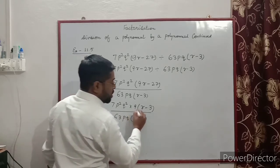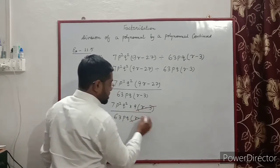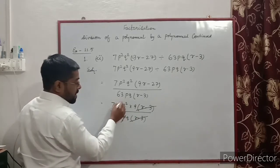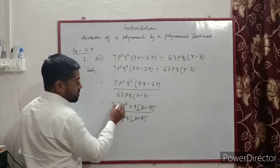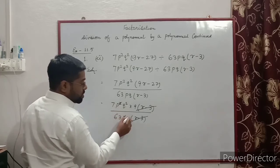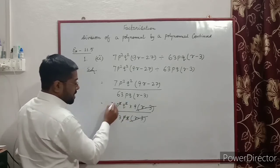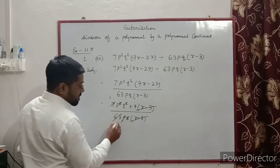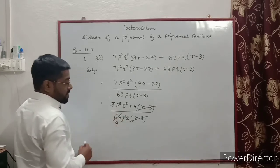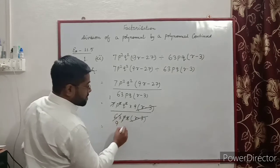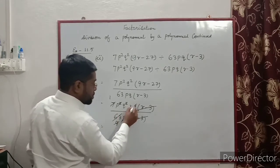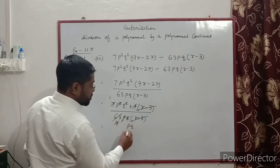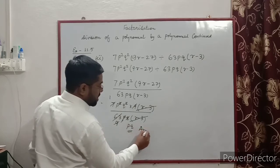Canceling the common factor (r − 3). Now for p: here is p² and here is p³, so p² cancels leaving p. q cancels. 7 and 63: since 7 × 9 = 63, both 7 and 9 cancel out. So we have p remaining — that is the answer, q²/p... the answer is q²/p. That is the answer.